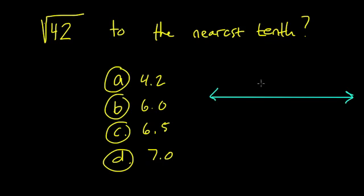And I know it's between, well, let's test this out. I have 6 squared, which is 36. So the square root of 42 is above 6, and 7 squared is 49. 42 is below 49, so the square root of 42 is below 7.